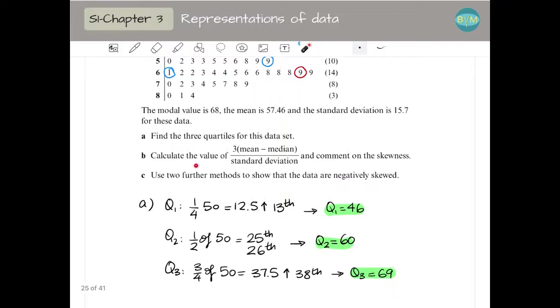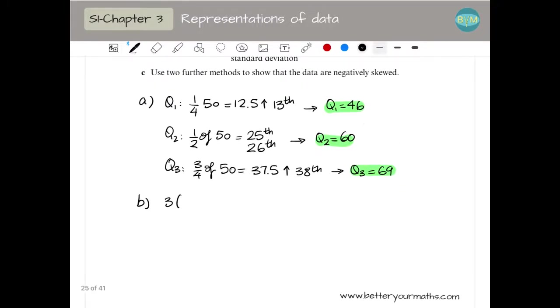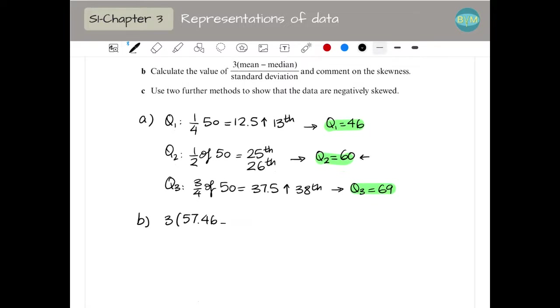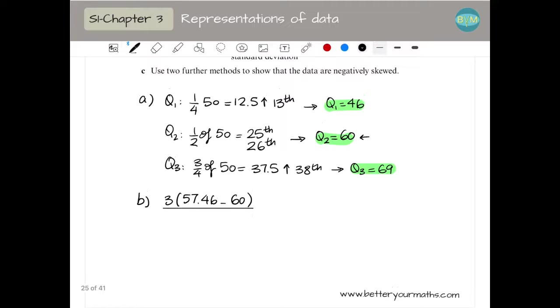Then, next question says, calculate the value of 3(mean minus median)/standard deviation and comment on the skewness. Remember that this is a measure of skewness. So for part B, we just do three times the mean, which is given in the question as 57.46, minus the median, which is Q2, so 60, all divided by the standard deviation, which is given as 15.7. And this value is minus 0.486, which means that my skewness is negative. So negative skewness. And that's what you just have to say. You find the value and then you decide if it's positive or negative or if the thing is symmetrical.